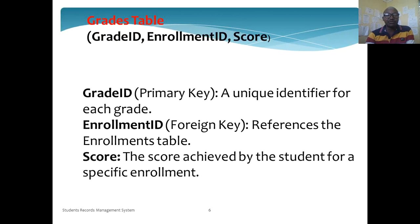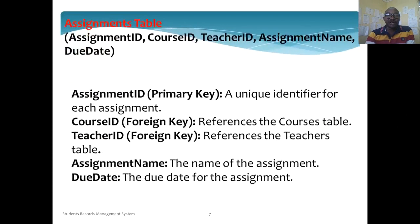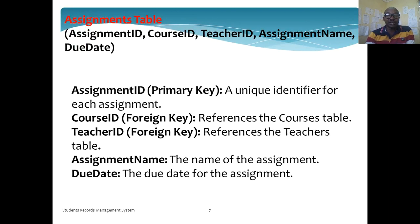Then we shall have the grades table where we shall have the grade ID as the primary key, enrollment ID as the foreign key, and the score. Then we shall have the assignments table where we shall have the assignment ID as the primary key, course ID as the foreign key, teacher ID as the foreign key, then assignment name and due date. The purpose of having these foreign keys is because of relationships and also to enhance referential integrity.